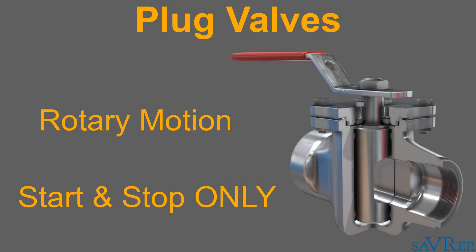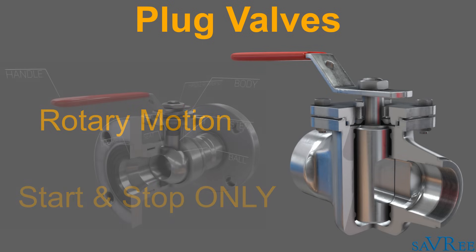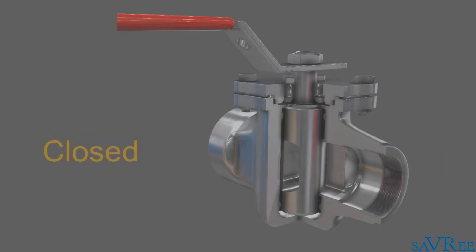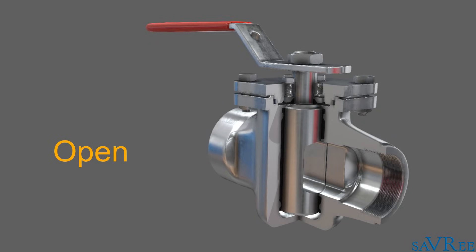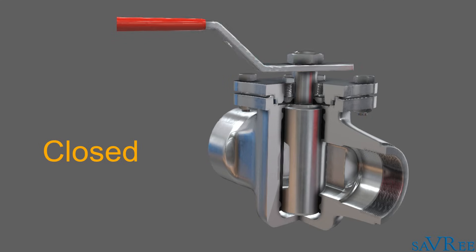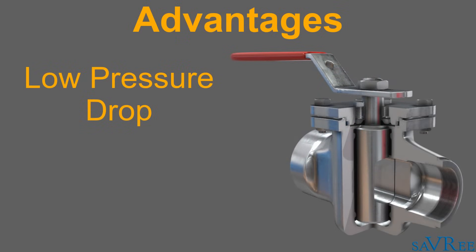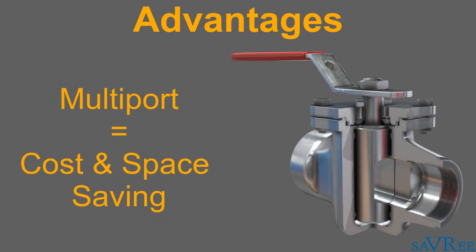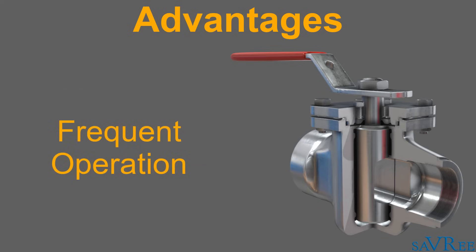A plug valve is a rotary motion valve used to start or stop flow. The name is derived from the shape of the disc, which resembles a plug. The design is very similar to a ball valve, although the shape of the disc is different. In the open position, the passage in the plug lines up with the inlet and outlet ports of the valve body. When the plug is turned 90 degrees from the open position, the solid part of the plug blocks the ports and stops flow. When fully open, there is a very low pressure drop across the valve. An important characteristic is that it is easy to adapt for multi-port applications, which can eliminate the need for as many as four conventional shut-off valves — a considerable cost and space saving. Plug valves are often used in non-throttling on-off applications, particularly where the valve must be operated frequently.